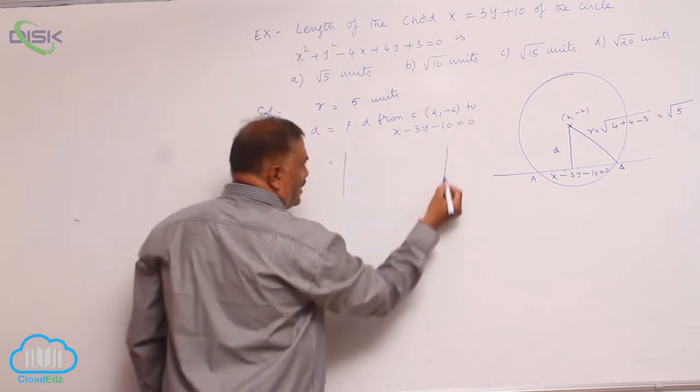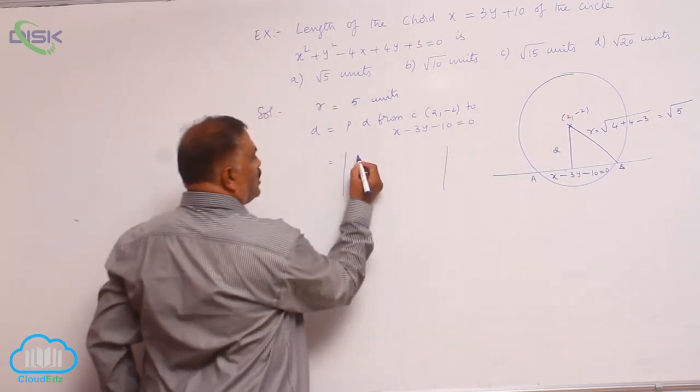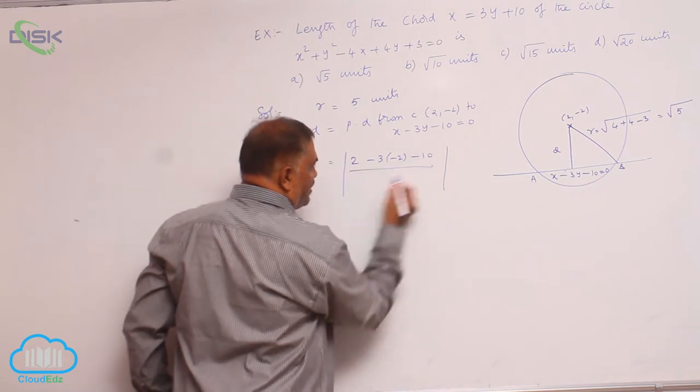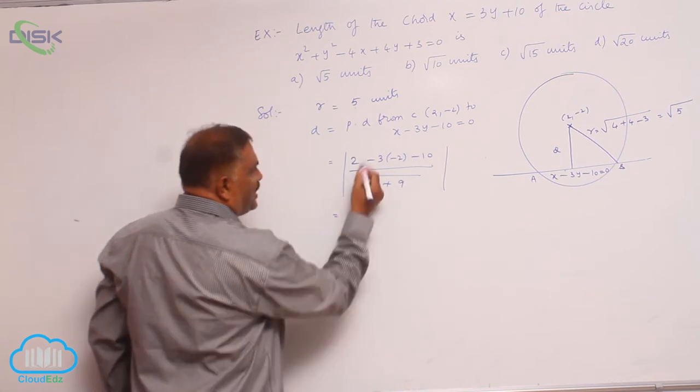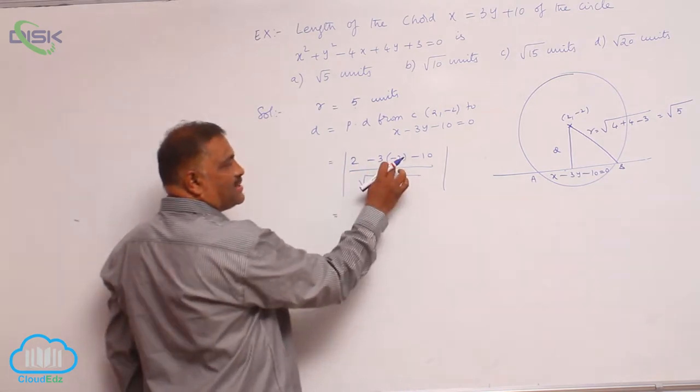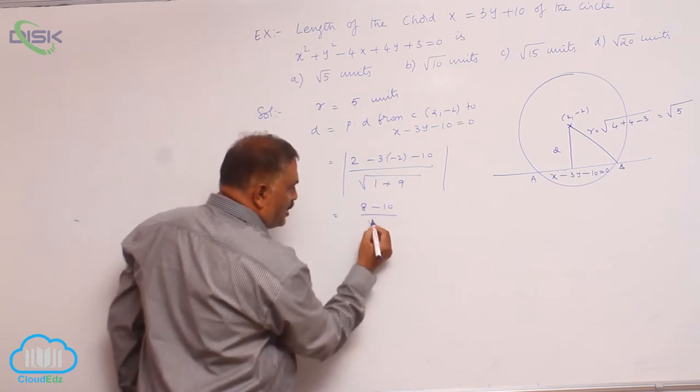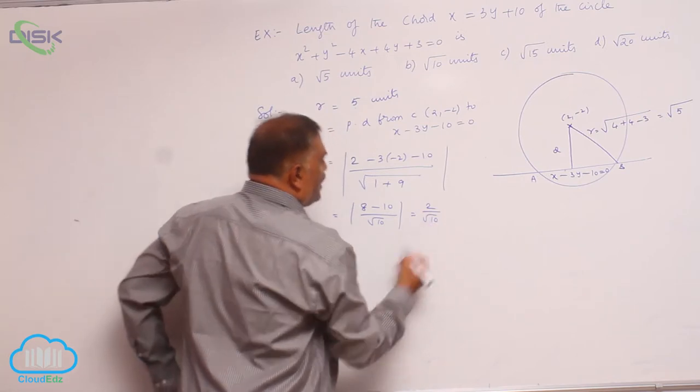So perpendicular distance, let us calculate from 2 comma negative 2. This is 2 minus 3 into negative 2 minus 10 divided by square root of a squared plus b squared. This is 2 plus 6, that is 8, 8 minus 10 divided by root 10, that is 2 by root 10. Now this is d.